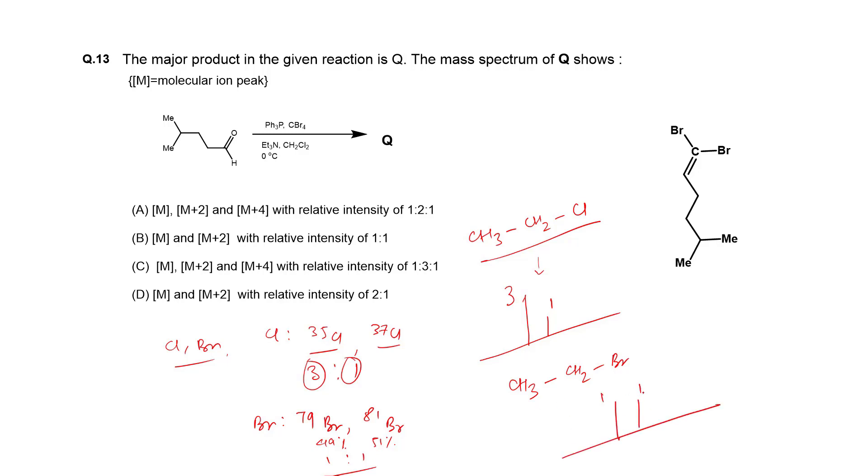Now what will happen if we have 2 bromines? Suppose one bromine is A and Br B. So it can be 79-Br A with 81 isotope, and for this case 79-Br B and 81-Br B.